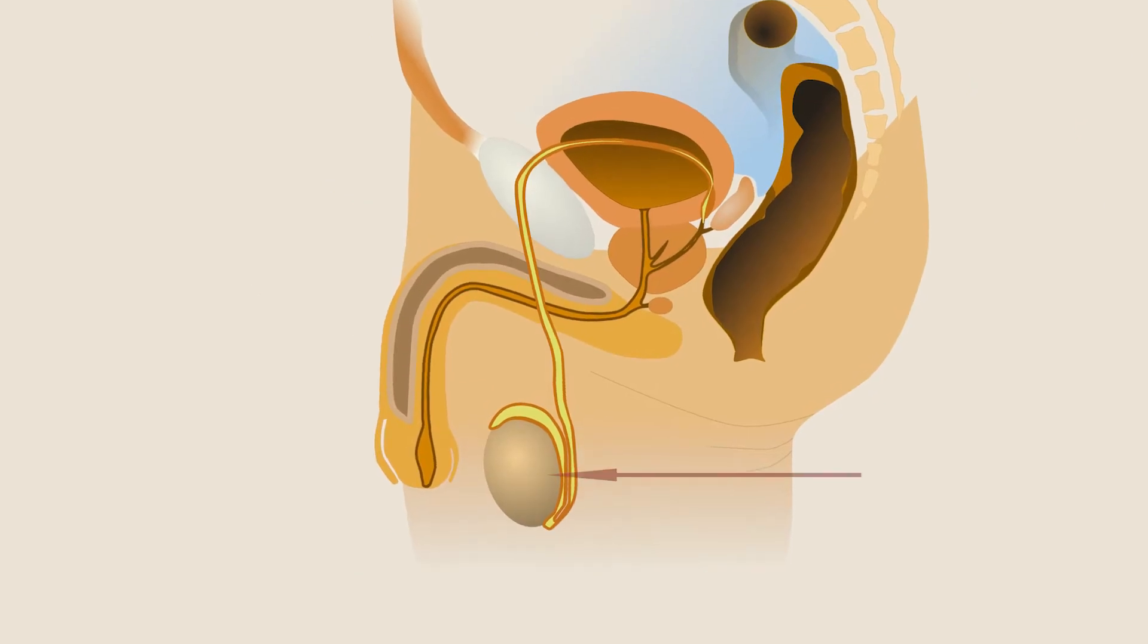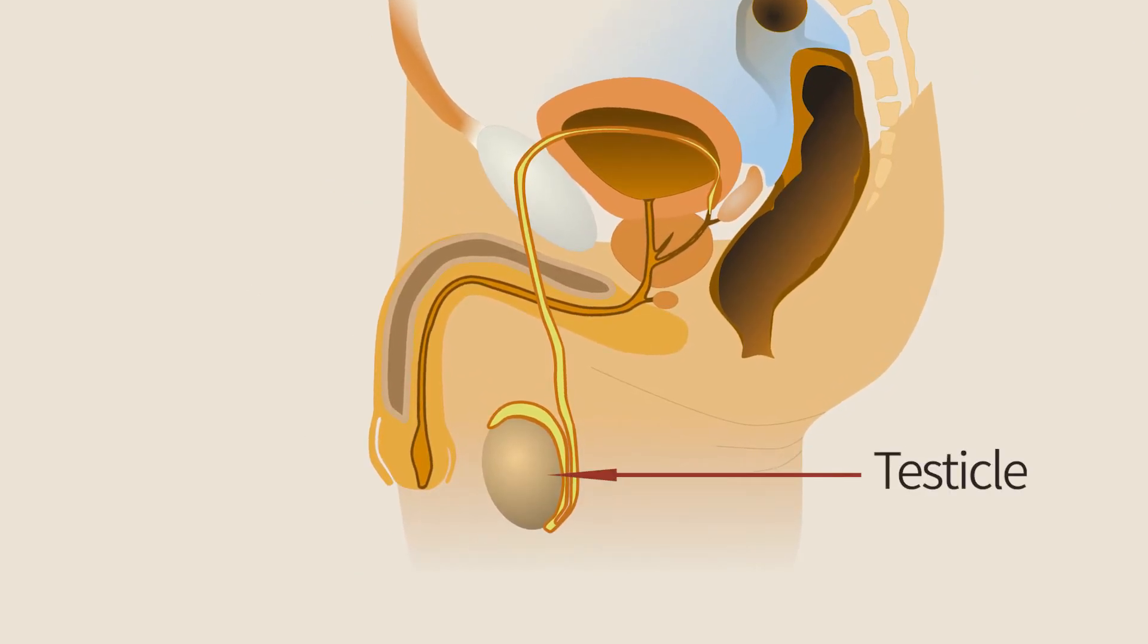Spermatogenesis comprises many phases that mostly take place in the seminiferous tubules of the testicles and take about three months in men. Testicles are kept outside of the body to maintain the slightly lower temperature required by spermatogenesis.